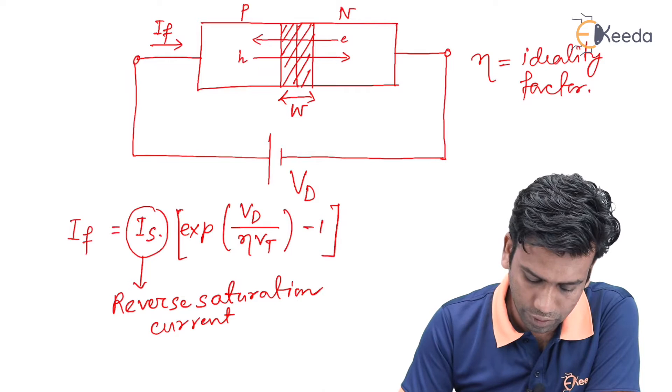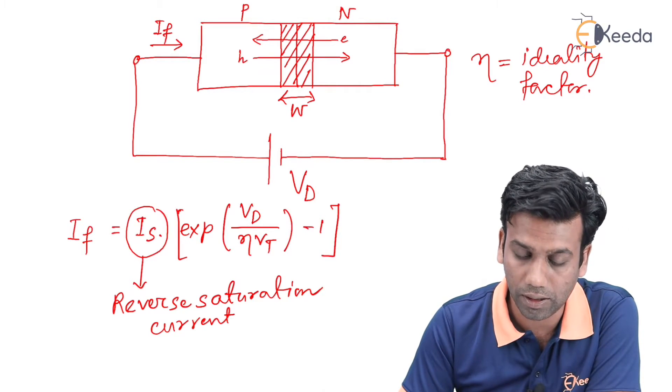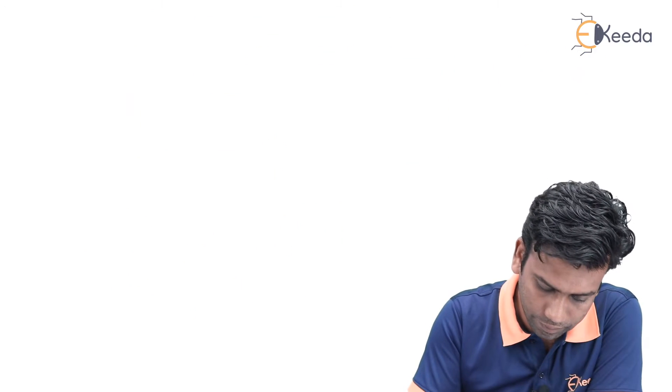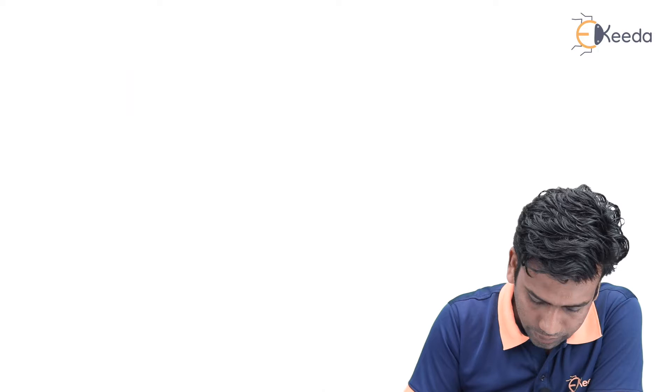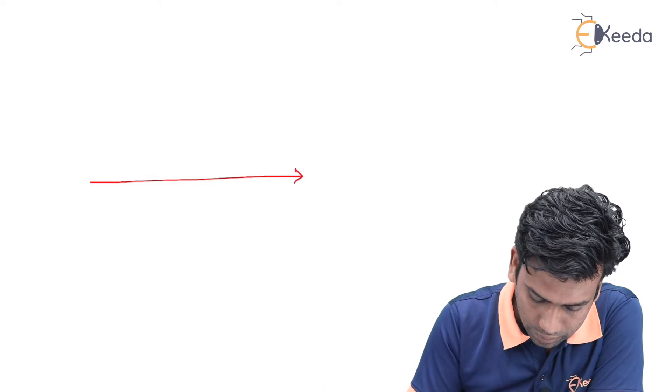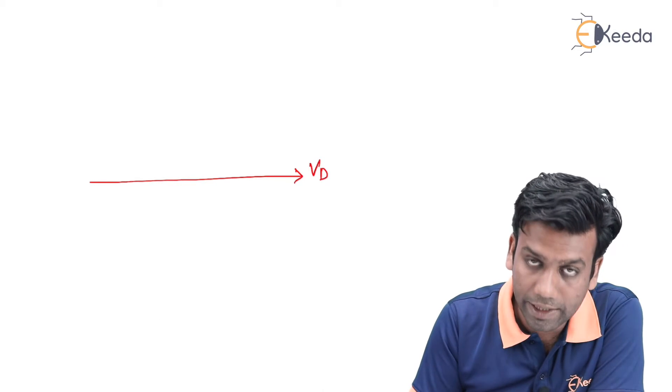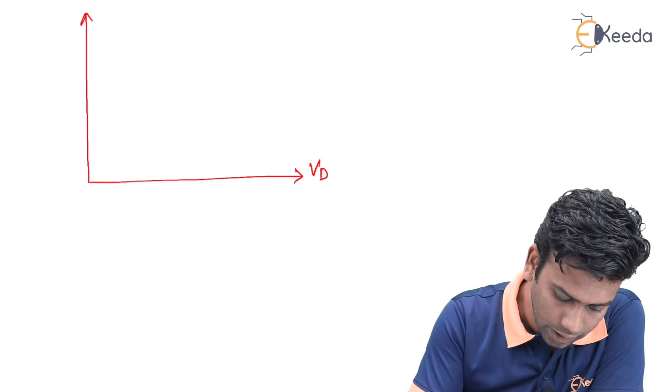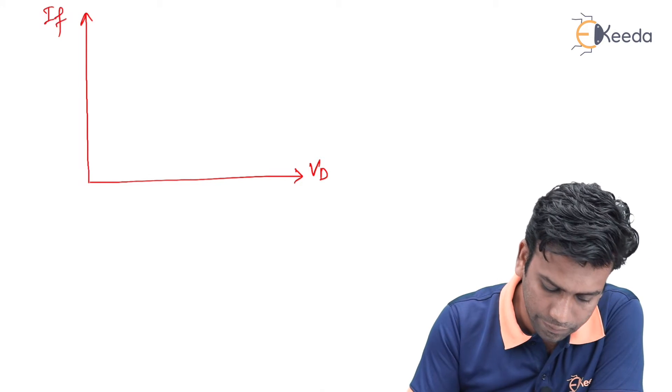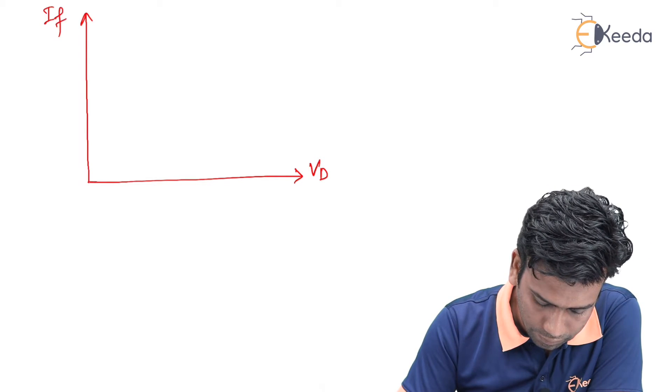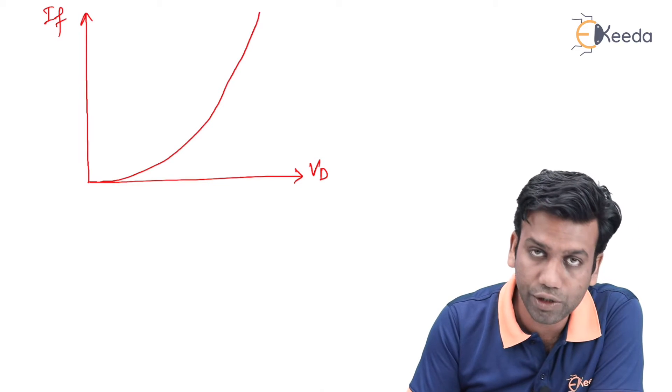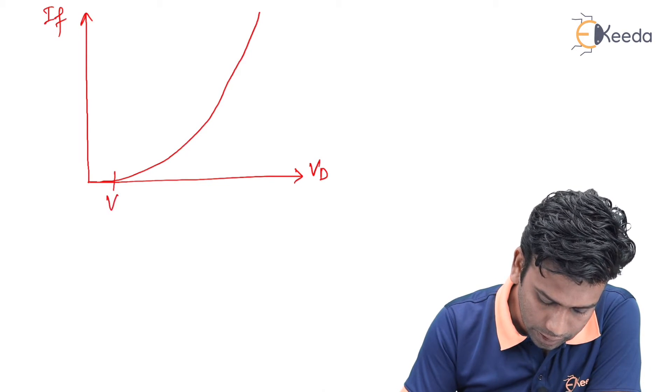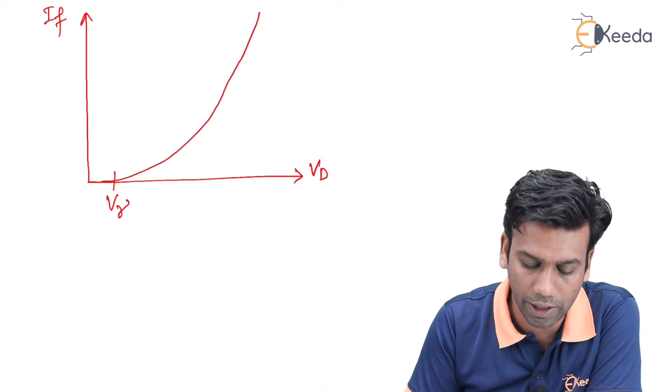If we draw this I_f versus V_D graph, in the x-axis I am taking V_D, in the y-axis if we take I_f, then the graph will increase in an exponential manner where this voltage is the cut-in voltage or gamma of the diode.